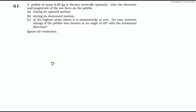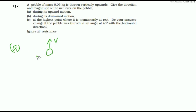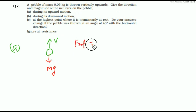Let us go to question number 2. A pebble of mass 0.5 kg is thrown vertically upward. Give the direction and magnitude of net force on the pebble. Part 1: during its upward motion. Velocity direction is upward. As you know, mg will always act in the downward direction. So, the net force on the pebble equals mass 0.5 into g equals 10, which will be 0.5 Newton.